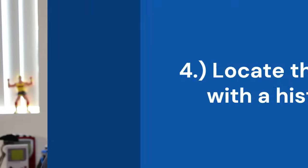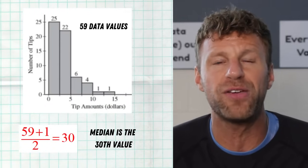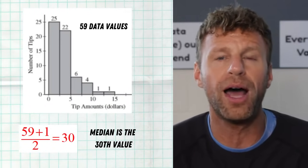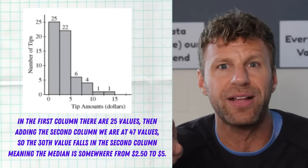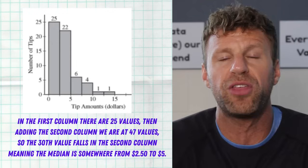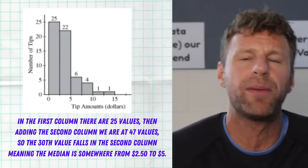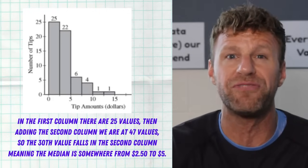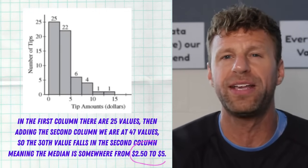Tip number four: be able to find the median based on a histogram. There is no formula to find the median of a set of data, but we do have a formula to tell you where the median is located. If you take your sample size n plus one divided by two, that will tell you the location of the actual middle value. If you have a histogram, you don't have all of your values, but you can still count from that histogram to determine where that middle value falls — counting through bars until you reach that spot, then you know what interval on the histogram contains your median.